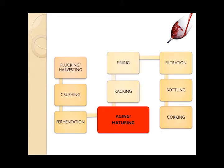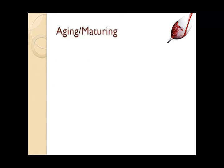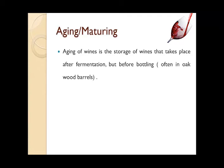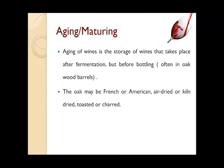Once fermentation and pressing is done, the wine is stored in oak wood barrels for maturation, also called aging. Aging of wine is the storage of wine that takes place after fermentation but before bottling, and is often done in oak wood barrels. The oak may be French or American, air dried or plain dry, toasted or charred.